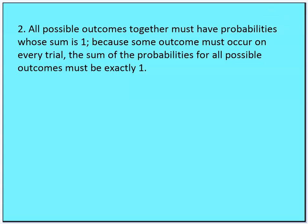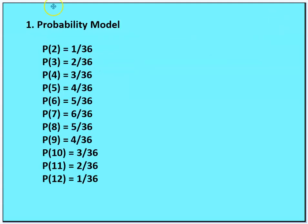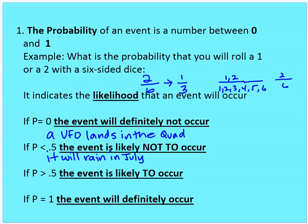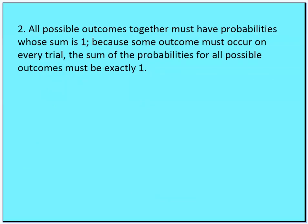Rule number two: all possible outcomes together must have probabilities whose sum is 1, because some outcome must occur on every trial. If we take the example of rolling the dice, the sum of all probabilities for all possible outcomes should add up to 1.